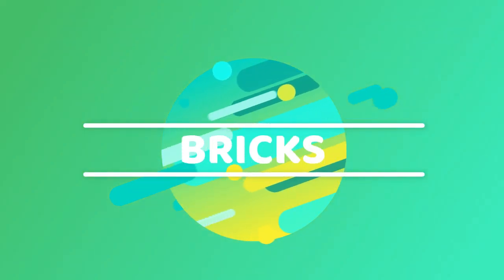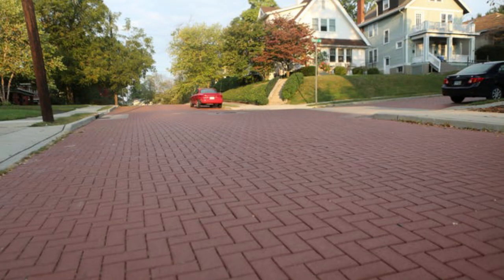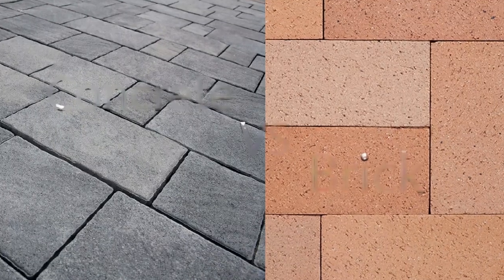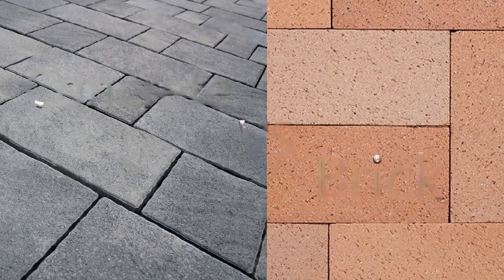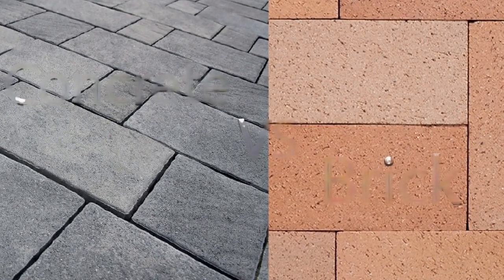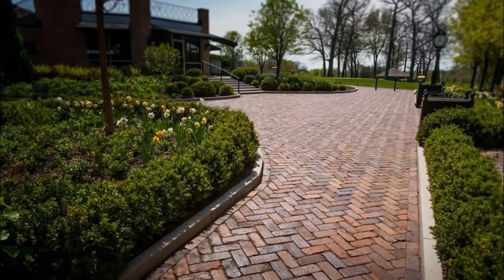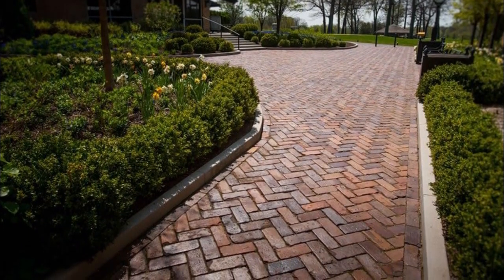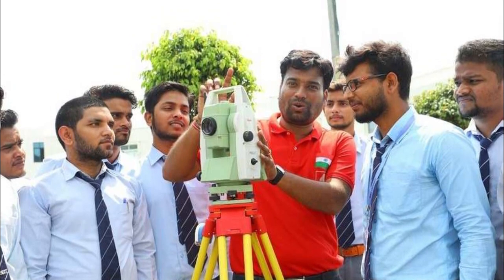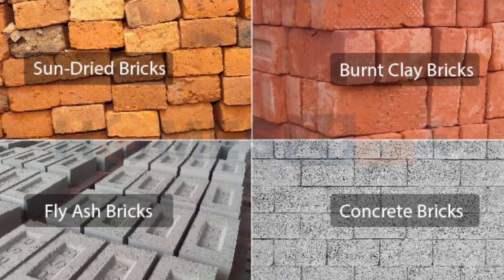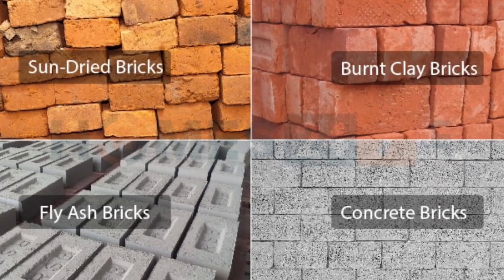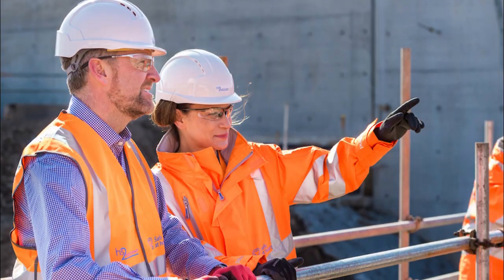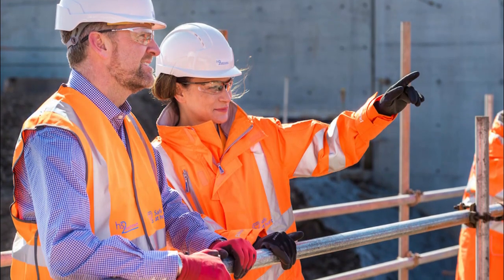Another material used in road construction is bricks. Brick roads are typically used in historic and pedestrian-heavy areas. They are made of clay or concrete bricks and are laid in a specific pattern to provide a stable and durable surface. However, they are a more expensive option and require skilled labor to construct and maintain. As students of civil engineering, it is important to know the different types of bricks and their properties, like strength, durability, and water absorption capacity, to determine whether they are suitable for a particular road construction project.